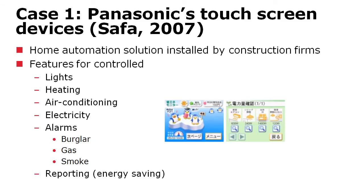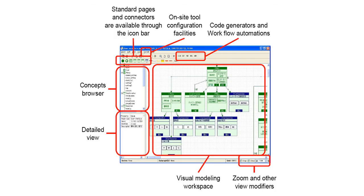Case one deals with a touchscreen device in home automation. You have a device on the wall of your home which controls your lights, heating, electricity, alarms, and so forth. Panasonic has built a language for building these kinds of touchscreen device applications. The modeling concepts are visible in the toolbar and engineers use those touchscreen concepts.